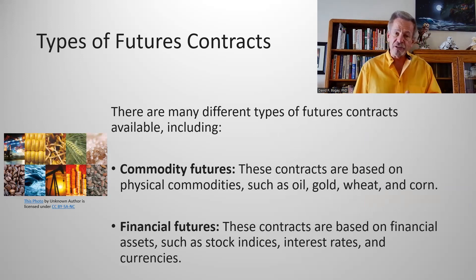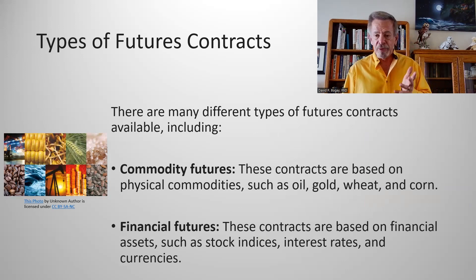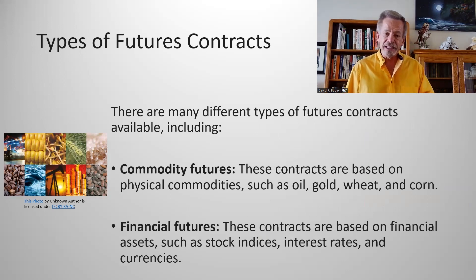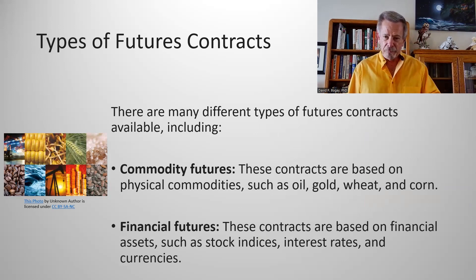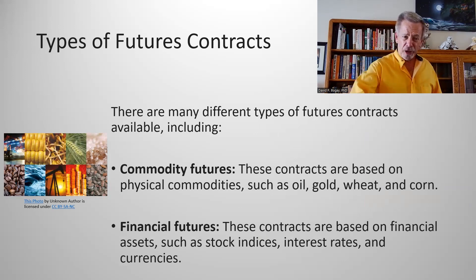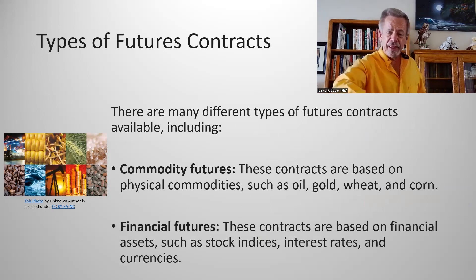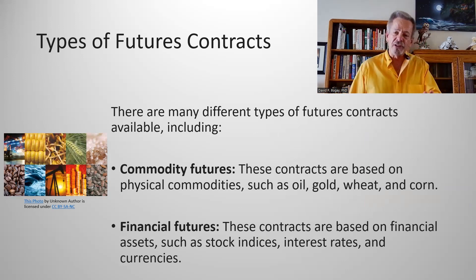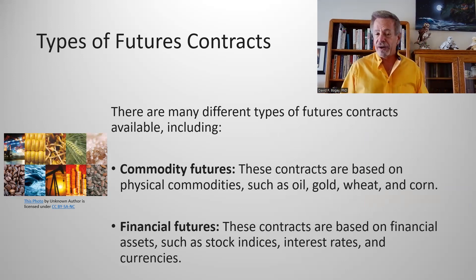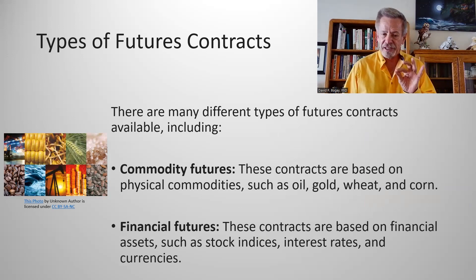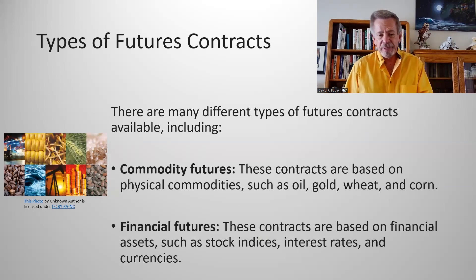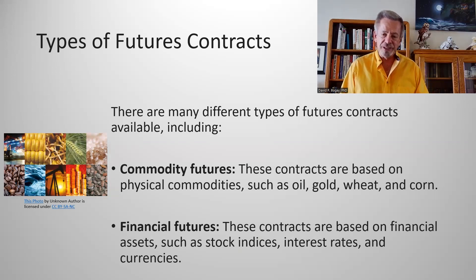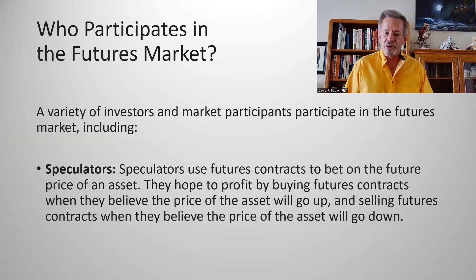There are a couple types of futures contracts. You have commodities, which are physical things like gold, wheat, corn, or oil — you're betting on the future price of that commodity. But you also commonly hear about futures in regards to stock indexes, interest rates, currencies, and other financial assets.